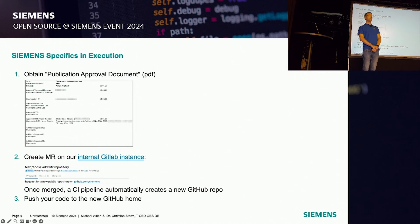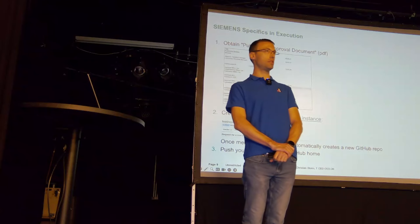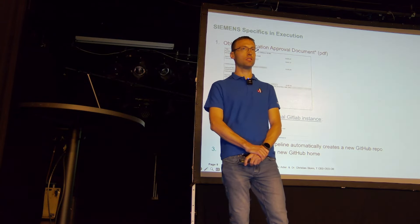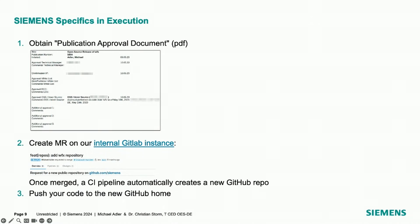In the case of Siemens, we also had to do some export control classification, which was fine. Once you have the approval document, it's actually only three steps: create a merge request on our internal GitLab instance, attach the approval document, and once it's merged, a CI pipeline runs and sets up your GitHub repository automatically. Then you can push whenever you want. It's actually very simple and very nicely automated.